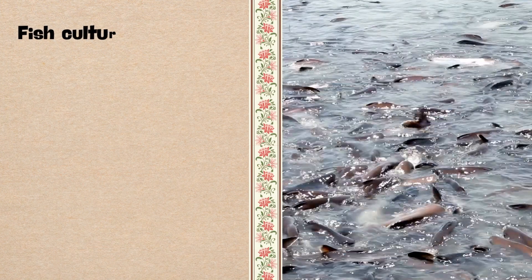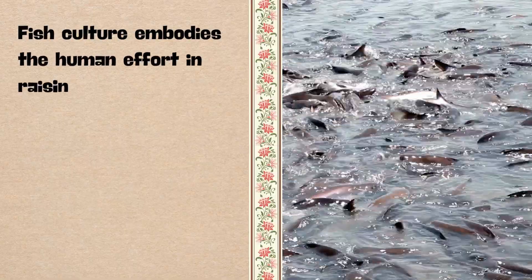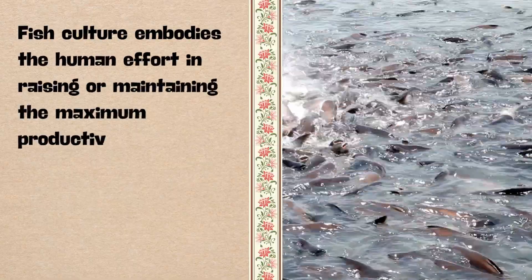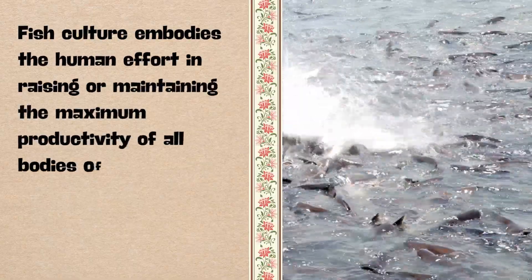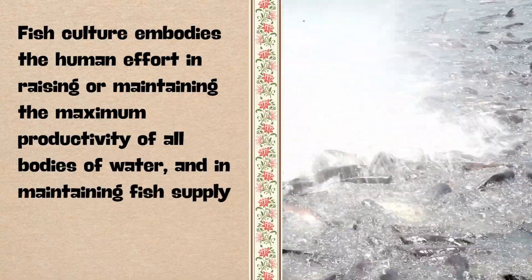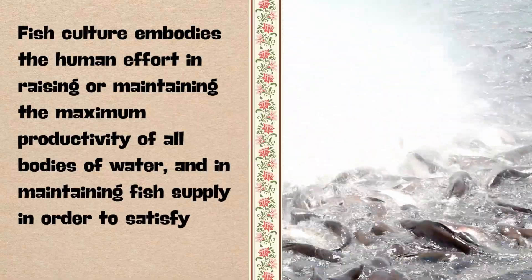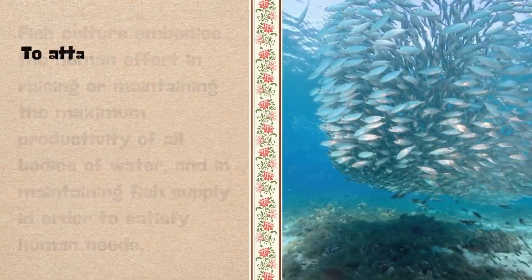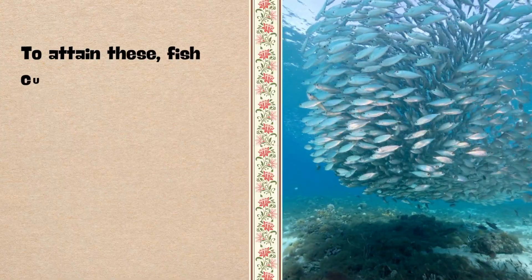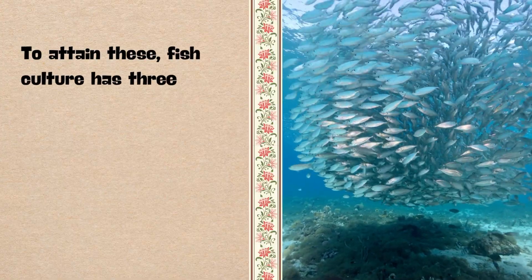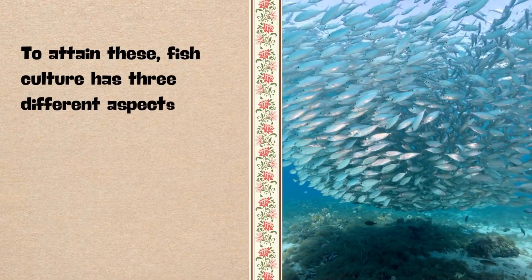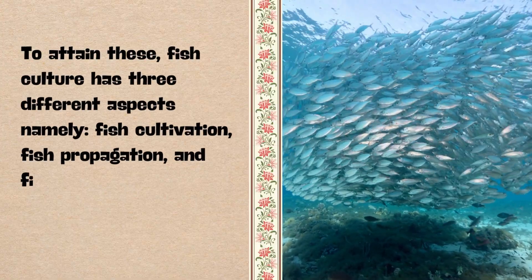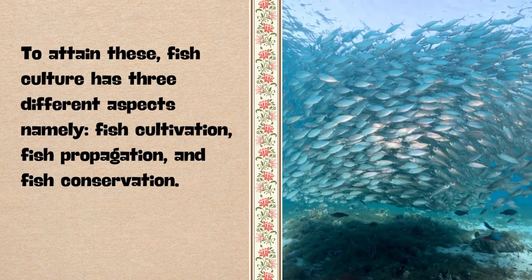Fish culture embodies the human effort in raising or maintaining the maximum productivity of all bodies of water, and in maintaining fish supply in order to satisfy human needs. To attain these, fish culture has three different aspects namely: fish cultivation, fish propagation, and fish conservation.